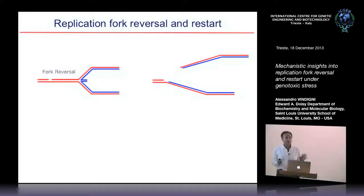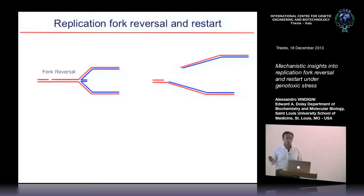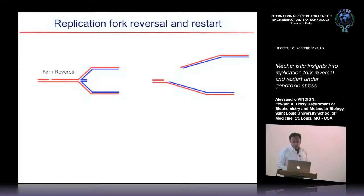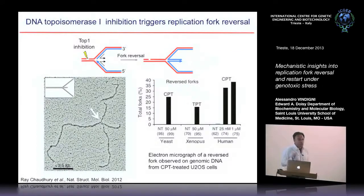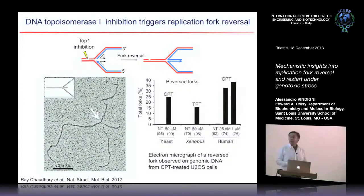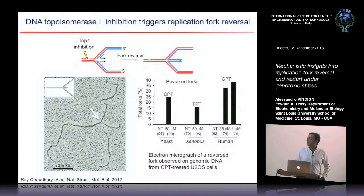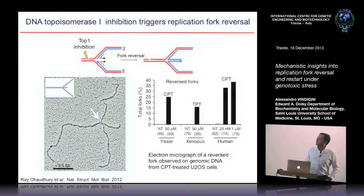The idea that replication forks can reverse was proposed by the group of Strauss more than 35 years ago based on studies of UV light effects on mammalian cells. However, there was never direct evidence that such structures could form in vivo — until basically last year, when the group of Massimo Lopez in Zurich showed that reverse replication forks can form in cells using electron microscopy.